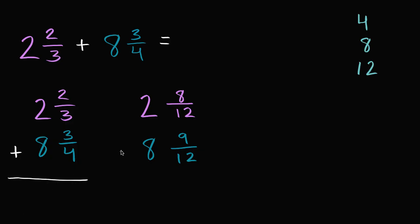And now we can add. And what do we get? We have eight twelfths plus nine twelfths. That's going to be seventeen twelfths.